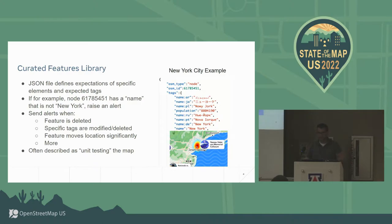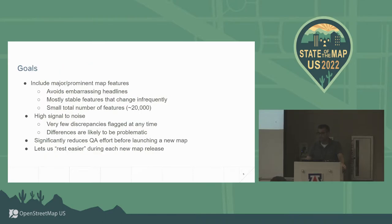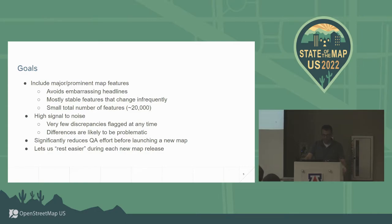I often describe this as unit testing the map for major map features, and it turns out this is a great way to prevent major forms of vandalism. Our goals are to include major and prominent features — things that can avoid embarrassing headlines. Mostly stable features. Obviously somebody could delete the New York City node and recreate it with a new ID, but in general these features are pretty stable. The New York City node has existed for 10 years, so it's pretty safe. We're targeting a small number — around tens of thousands — with a very high signal-to-noise ratio, so at any given time there's really only a handful of things that get flagged. Generally, when it calls things out, they're a big deal that we need to look at.